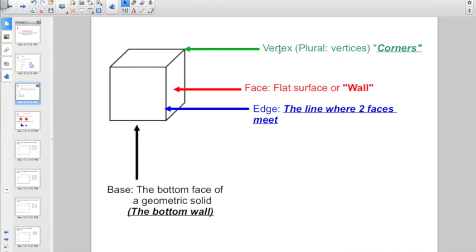Some more very important vocabulary right now. We start off with what's called a vertex. And the plural is kind of tricky. Those are vertices.